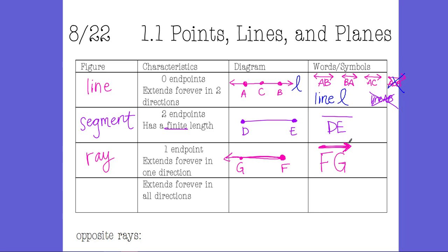We always symbolically write rays going to the right, which is why it's super important to put your endpoint as the first letter. Your ray might be pointing down or in all sorts of directions. You just have to put the endpoint as the first letter, and the direction it goes through as the second letter. Always put the endpoint first when naming a ray.